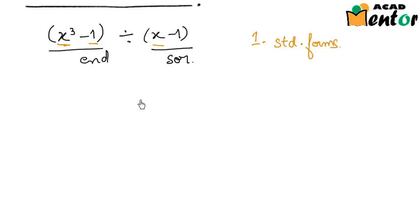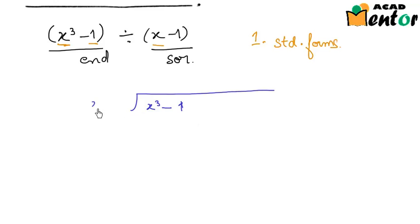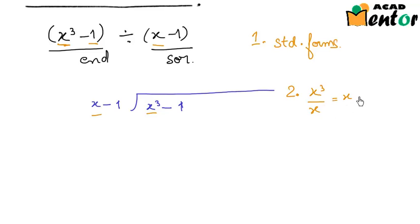Let me draw the long division symbol here and we will get started. I write the dividend x cubed minus 1 here and the divisor x minus 1 here. The second step is dividing the first term of the dividend by the first term of the divisor to give us the first term of the quotient. x cubed divided by x gives us x squared, so x squared is the first term of the quotient.